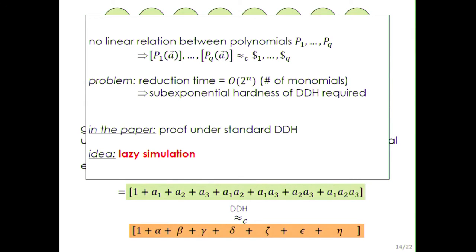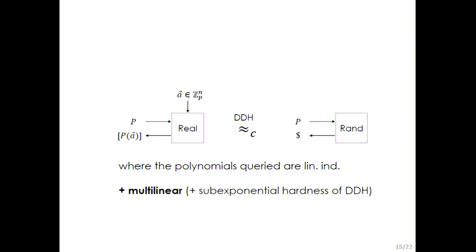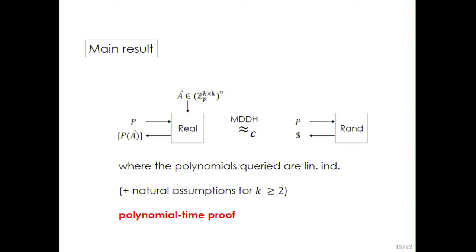The naive approach of expanding polynomials requires simulating up to 2^N monomials for multilinear polynomials, giving an exponential-time reduction. In the paper we use lazy simulation to avoid this, though I don't have time to explain it here. Furthermore, in the paper we prove more: the polynomials don't have to be multilinear and can be any degree, and the key can be a vector of matrices, which handles PRFs based on DLIN or KLIN assumptions. We obtain a polynomial-time proof.